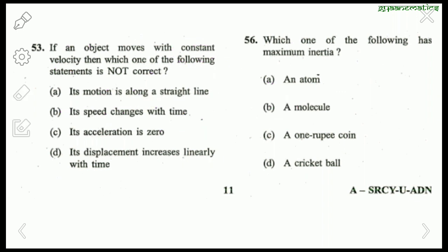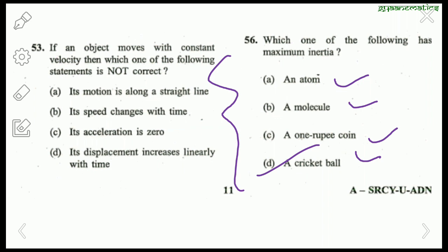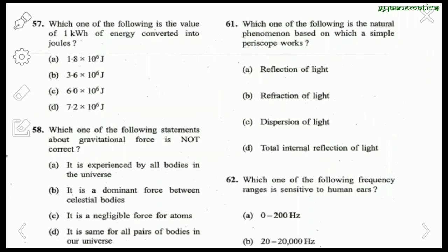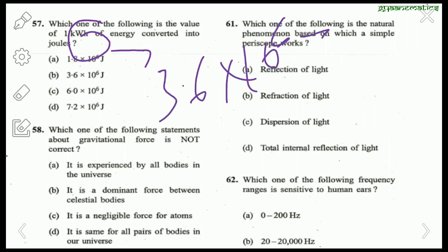Question 56: Which of the following has maximum inertia — an atom, a molecule, a rupee coin, or a cricket ball? Maximum inertia is where mass is maximum, so the cricket ball is the right answer. Question 57: The value of 1 kilowatt-hour is 3.6 × 10⁶ joules, so the right answer is B.